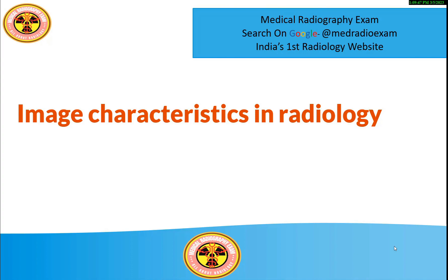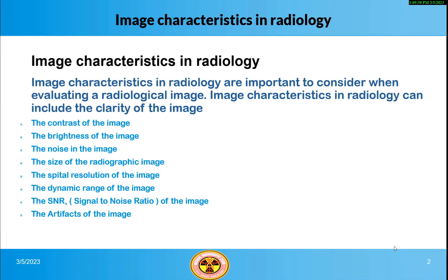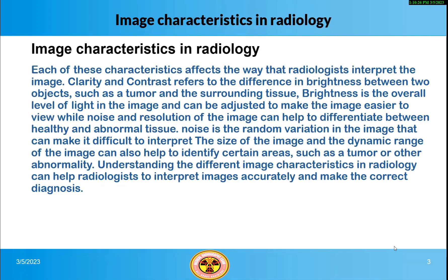Image characteristics in radiology are important to consider when evaluating a radiological image. These characteristics can include the clarity of the image, the contrast, the brightness, the noise, the size of the radiographic image, the spatial resolution, the dynamic range, the SNR (signal-to-noise ratio), and the artifacts of the image. Each of these characteristics affects the way that radiologists interpret the image.